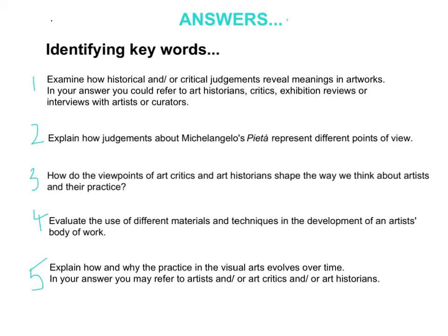Question one: Examine how historical and/or critical judgments reveal meanings in artworks. In your answer you could refer to art historians, critics, exhibition reviews or interviews with artists or curators. The keywords historical and critical judgment are fairly obvious here. The and/or means you could talk about both history and criticism, or choose to focus on one. Question two: Explain how judgments about Michelangelo's Pietà represent different points of view. The key word is judgment, which means you're looking at criticism.